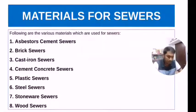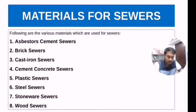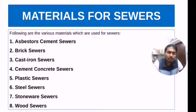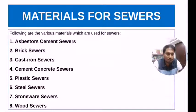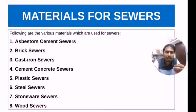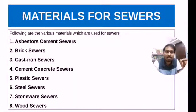While making the selection of materials for sewers, we need to carefully consider cost, durability, imperviousness, resistance to absorption, resistance to corrosion, strength, and weight of the materials. The various materials used for sewers include asbestos cement, brick, cast iron, cement concrete, plastic, steel, stoneware, and wood sewers. Each material has its own advantages and disadvantages.